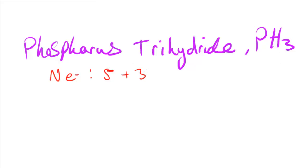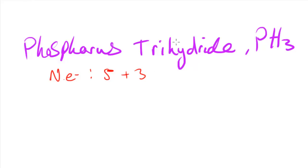If it were positively charged, that would imply a dative covalent bond and we would need to subtract one from the total. If it were negatively charged, it might have a dative covalent bond in the other direction, and so we would need to add one to the total.